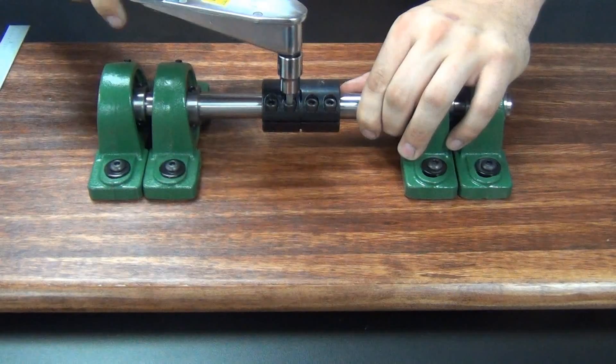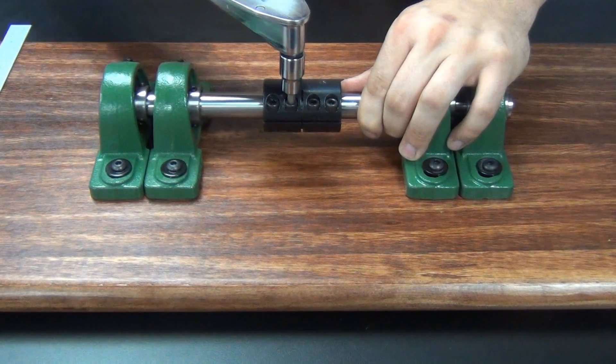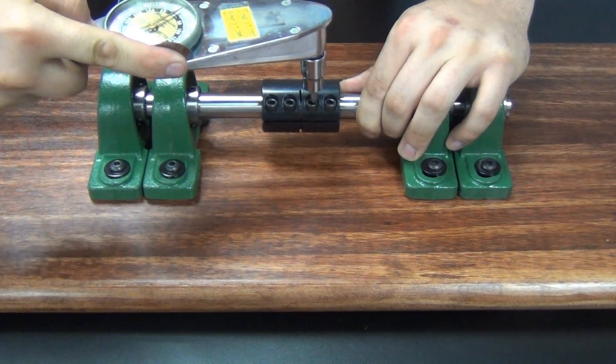Lastly, we will tighten the screws to the full recommended seating torque of 76 inch-pounds, following the same pattern from the inside to the outside.